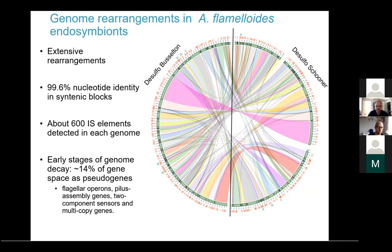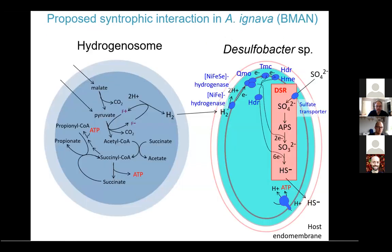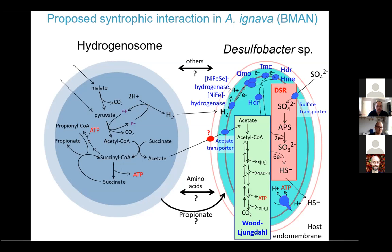We have proposed a syntrophic interaction happening between aneroamoeba and the Desulfobacteria genomes. It seems possible that the Desulfobacteria would be able to use hydrogen from the host hydrogenosomes, and potentially also utilize acetate in the Wood-Ljungdahl pathway. We're not quite sure if there are other players in this syntrophy, such as amino acid exchange or uptake of other short-chain fatty acids.